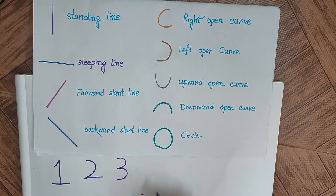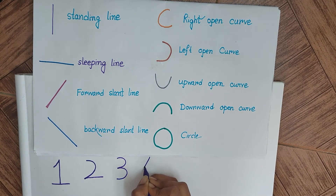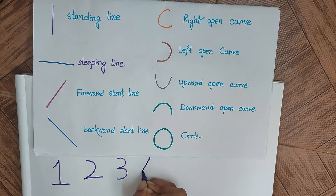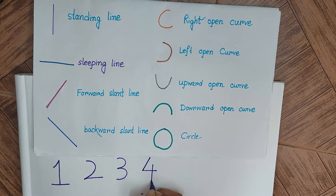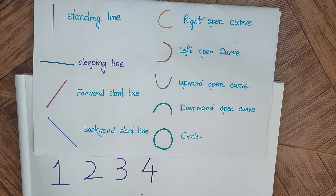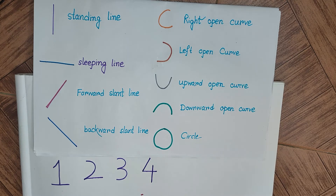For number 4, first we will draw a forward slanting line like this, then a slipping line from the bottom of the forward slanting line, and then with a little bit of space from the right side, a standing line at the bottom of the slipping line, which is 4.